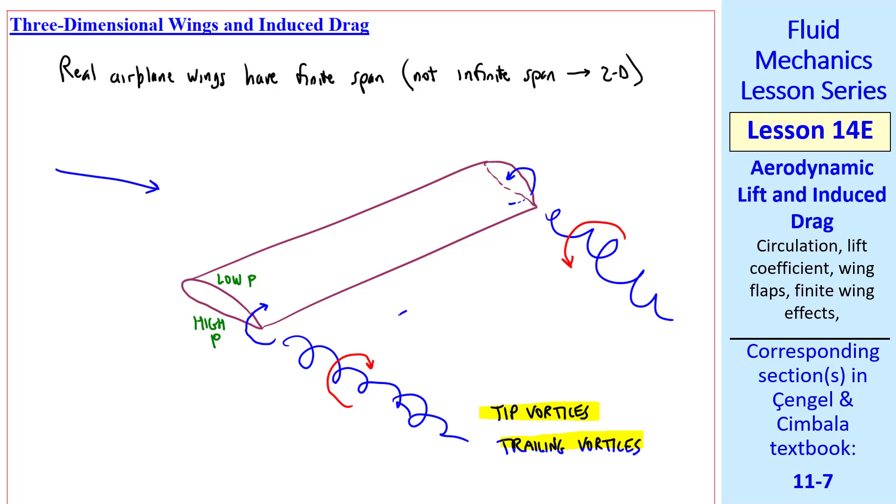These vortices are called tip vortices, or trailing vortices. Directly behind the wing, the airflow is forced downward by these vortices. This downward flow is called downwash. Further away from the tips, we get the opposite effect, and it's called an upwash. By the way, these tip vortices, or trailing vortices, can last for a long time. And the low pressure inside condenses water vapor, and can be seen sometimes for miles as contrails.